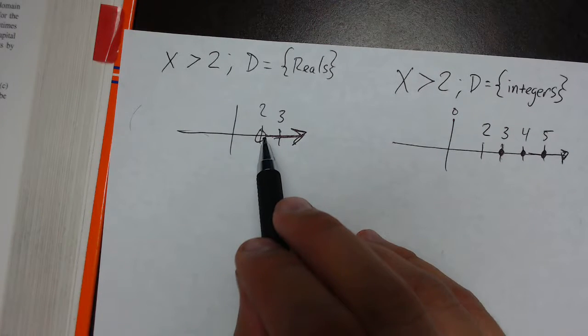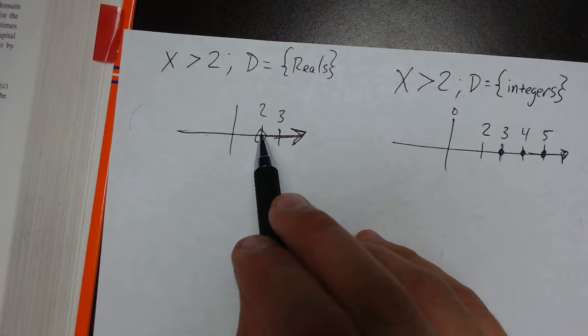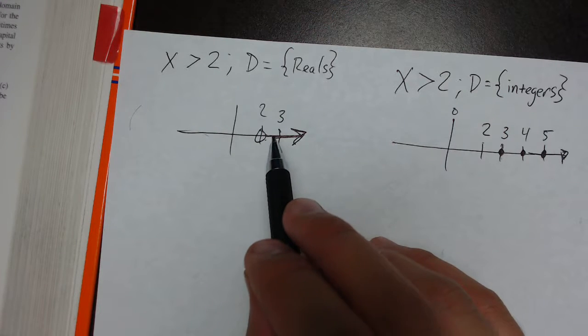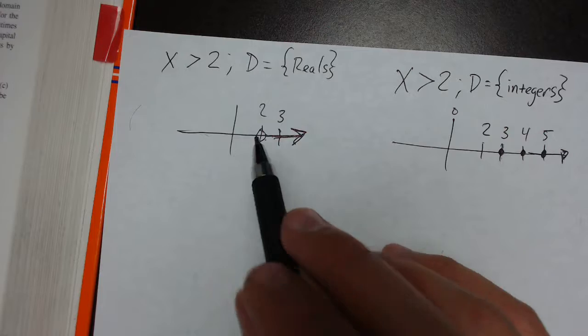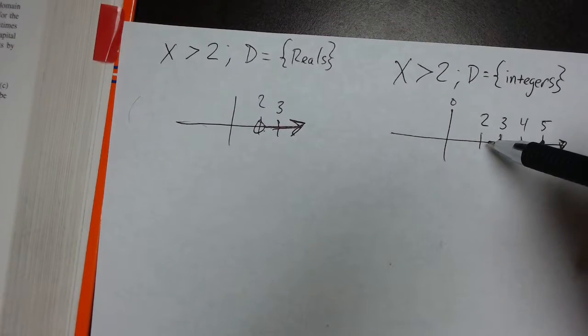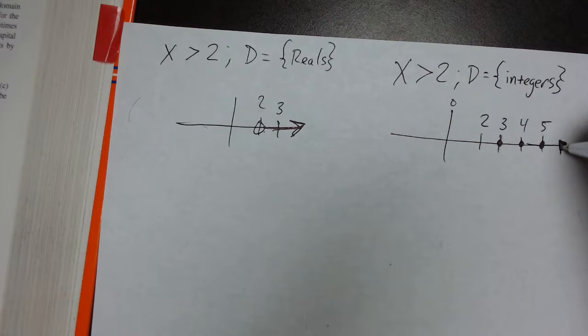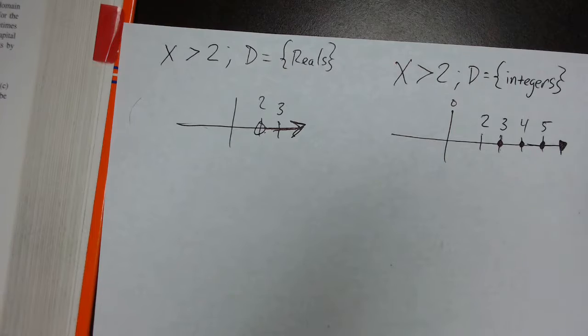And that's why I don't need an open dot at 2. Because if you remember, the open dot at 2 is saying that it does not include the number 2, but it does include 2.1 or 2.0001 or 2.5. So that's why we put the open dot at 2. However, if I'm only dealing with integers, I don't need an open dot at 2. I just need solid dots at 3, 4, 5, and then an arrow extending to the right saying that that pattern continues. So that's how we graph integers.